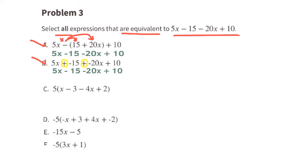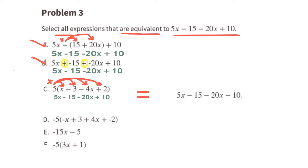Option C: 5 times x and 5 times a negative 3, or 5 times x minus 5 times 3. We can rewrite this as 5x minus 15, and we have 5 times a negative 4x — that's a negative 20x — and 5 times positive 2, that's a positive 10. This expression is also equivalent to the original expression.